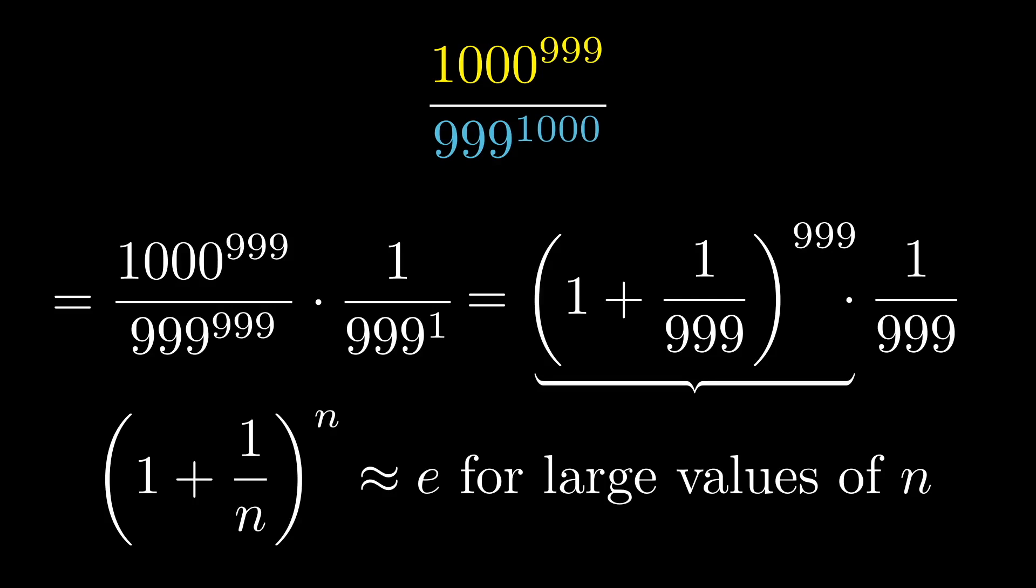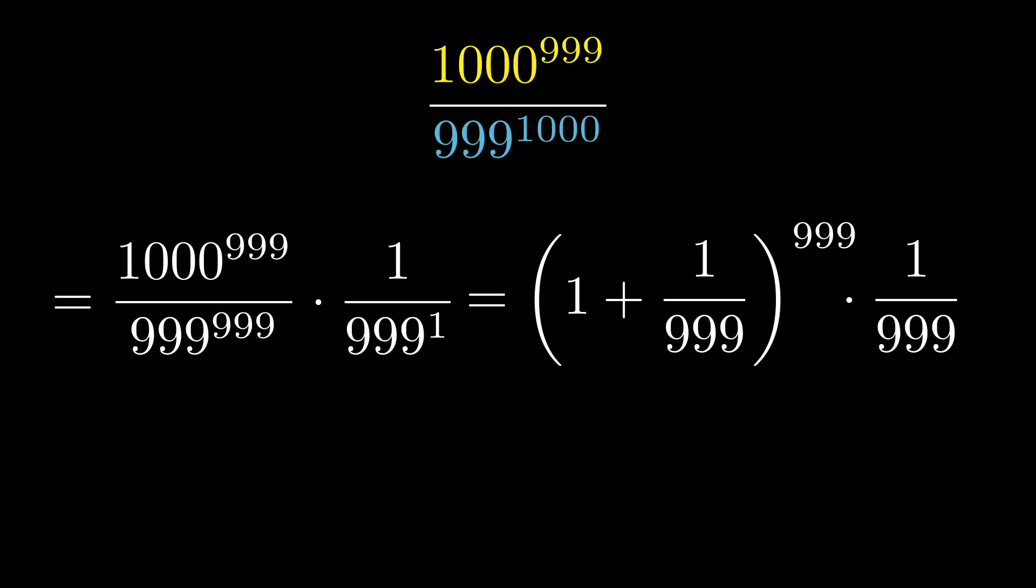The larger the value of N is, the closer this quantity is to E. And in this case, I argue 999 is sufficiently large to get a decent approximation. This is quite handy because we can replace that entire annoying quantity with approximately E.